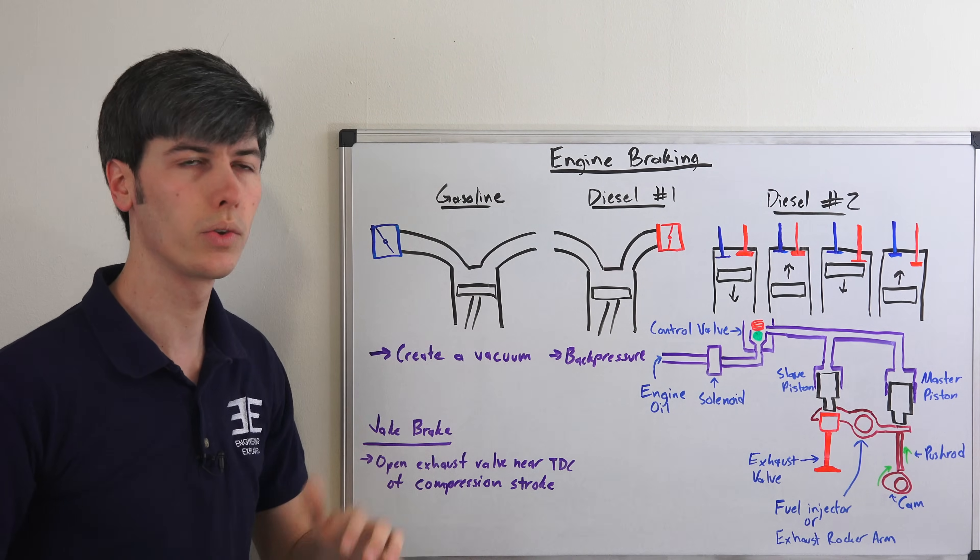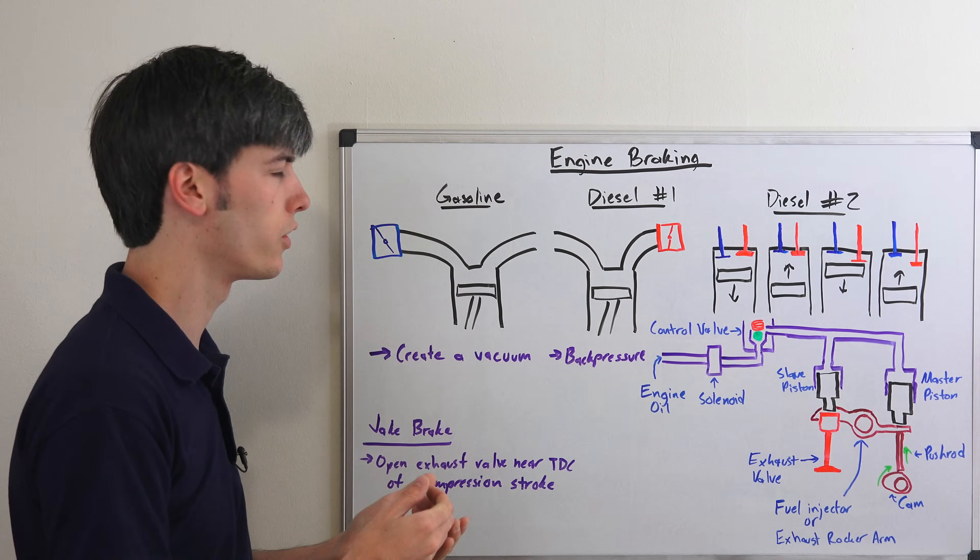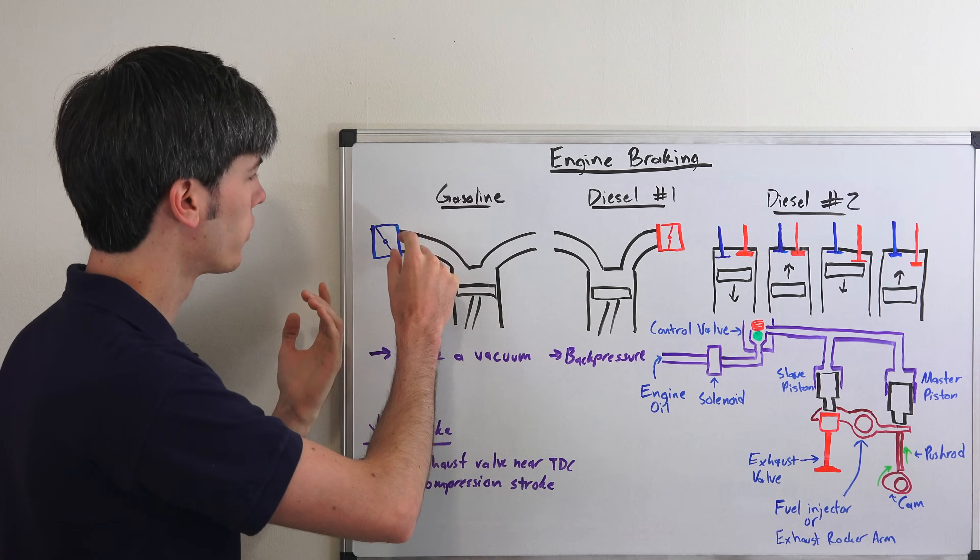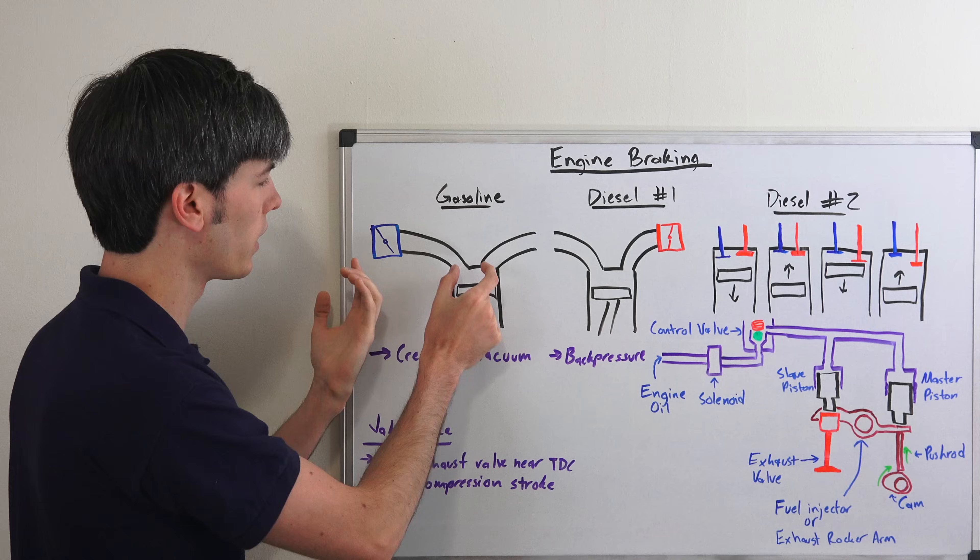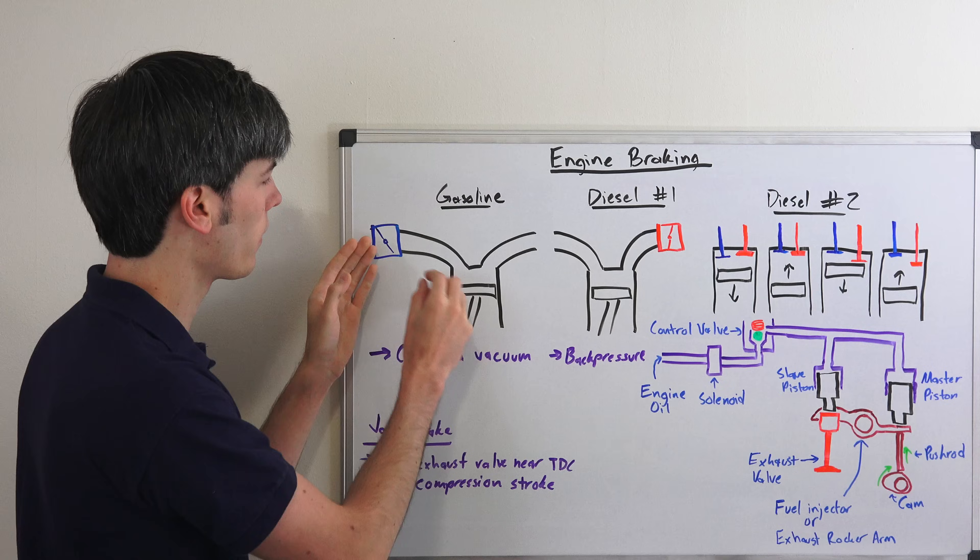First getting into the gasoline version. Basically with this when you let your foot off the throttle and you are leaving it in gear, the throttle body is going to close and so now as your piston moves down for the intake stroke, it's going to be trying to pull air in but this throttle body is preventing that so it's pulling a vacuum.